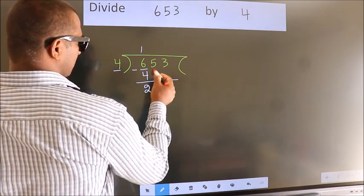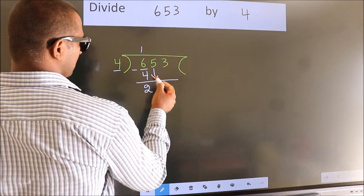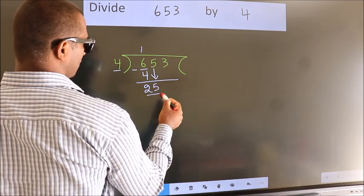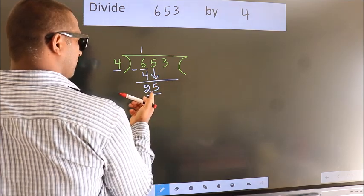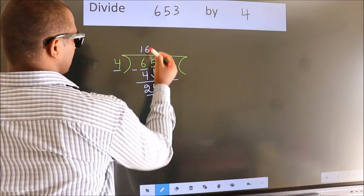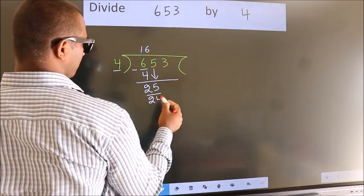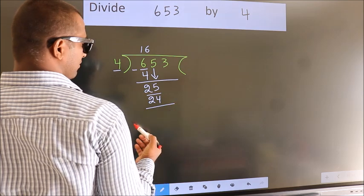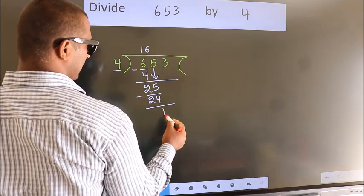After this, bring down the beside number. So, 5 down. So, 25. A number close to 25 in 4 table is 4, 6, 24. Now, we subtract. We get 1.